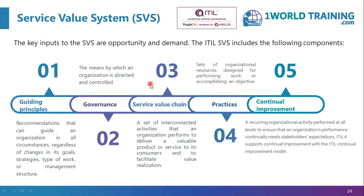There are three more components of the service value system. The core, or the middle element, is the service value chain, which is a set of interconnected activities that an organization performs to deliver a valuable product or service to its consumers and to facilitate value realization. By using the value chain activities, value streams may be designed — meaning a value stream is a series of steps that an organization undertakes to deliver value to its customers.